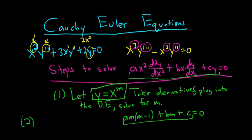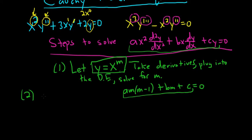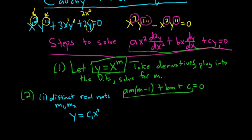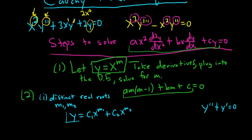Step two: when you solve the quadratic equation, you have three possibilities. The first possibility is that you get distinct real roots, say m1 and m2. The solution is then y equals c1 x to the m1 plus c2 x to the m2. This should remind you of solving equations like y double prime plus y equals 0 — except instead of e to the m1 and e to the m2, it's x to the m1 and x to the m2.